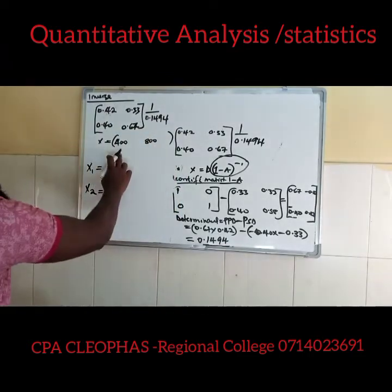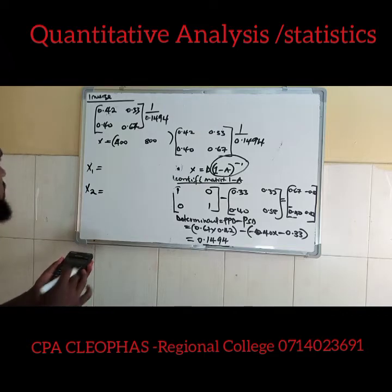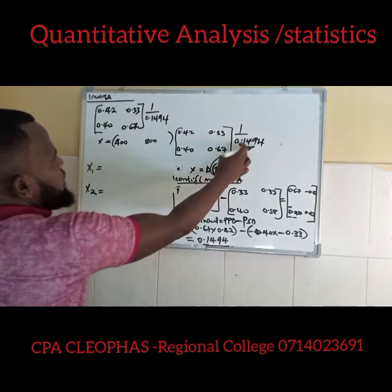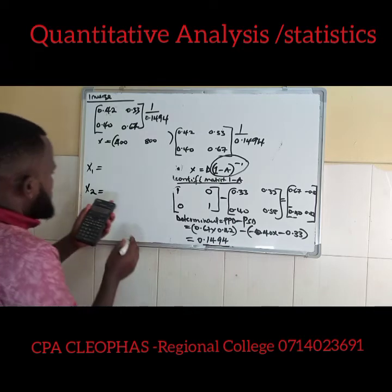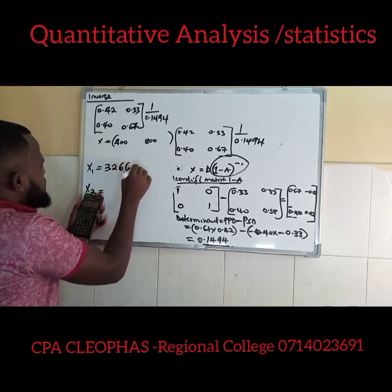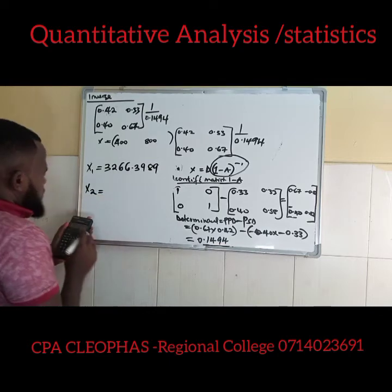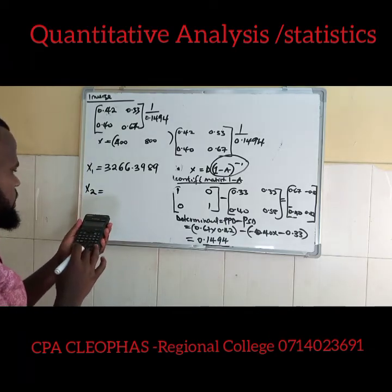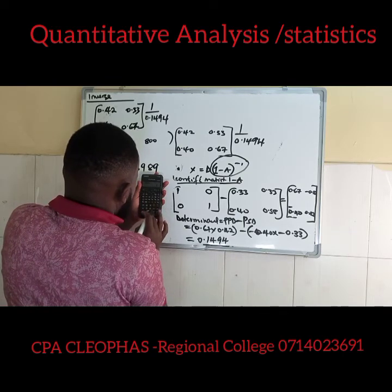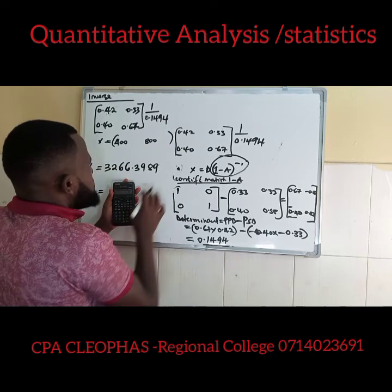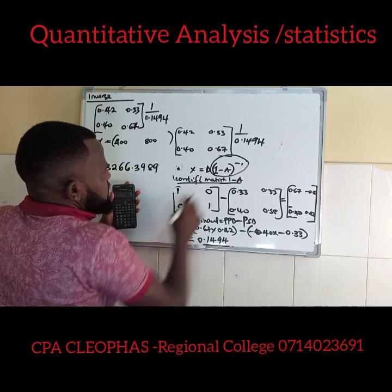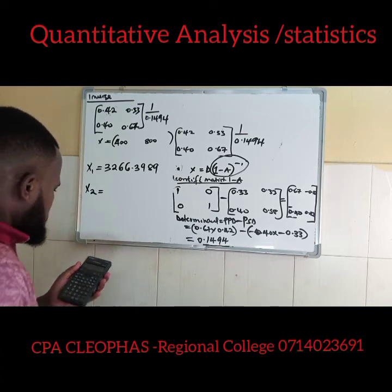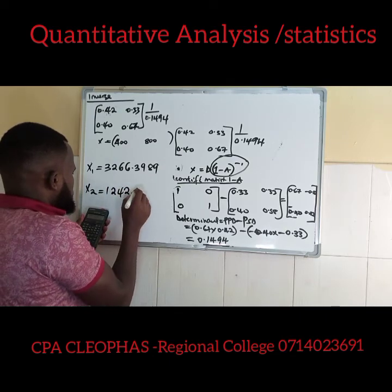For X1 output: (400 × 0.42 + 800 × 0.40) / 0.1494 = 488 / 0.1494 ≈ 3266.40 units. For X2 output: (400 × 0.33 + 800 × 0.67) / 0.1494 = 668 / 0.1494 ≈ 4472.56. Wait, recalculating — 400 × 0.33 + 800 × 0.67 = 132 + 536 = 668. Divided by 0.1494, I'm getting approximately 1242.30 units.